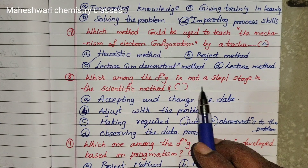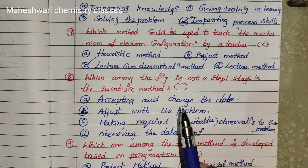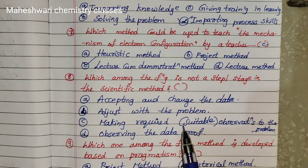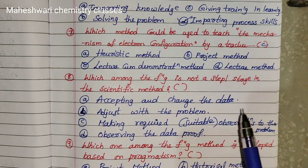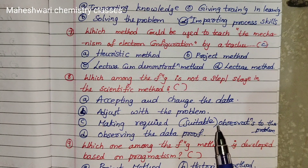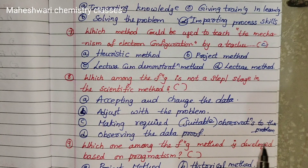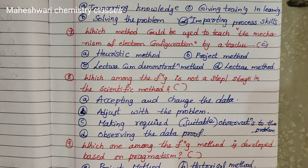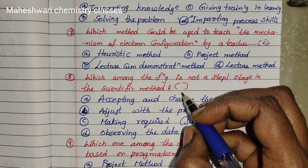Eighth question: Which among the following is NOT a step or stage in the scientific method? The question explanation is related to the full class provided in the description box. Options include accepting and changing data, adjusting with the problem, making required observations, observing the data proof. The answer is option B.